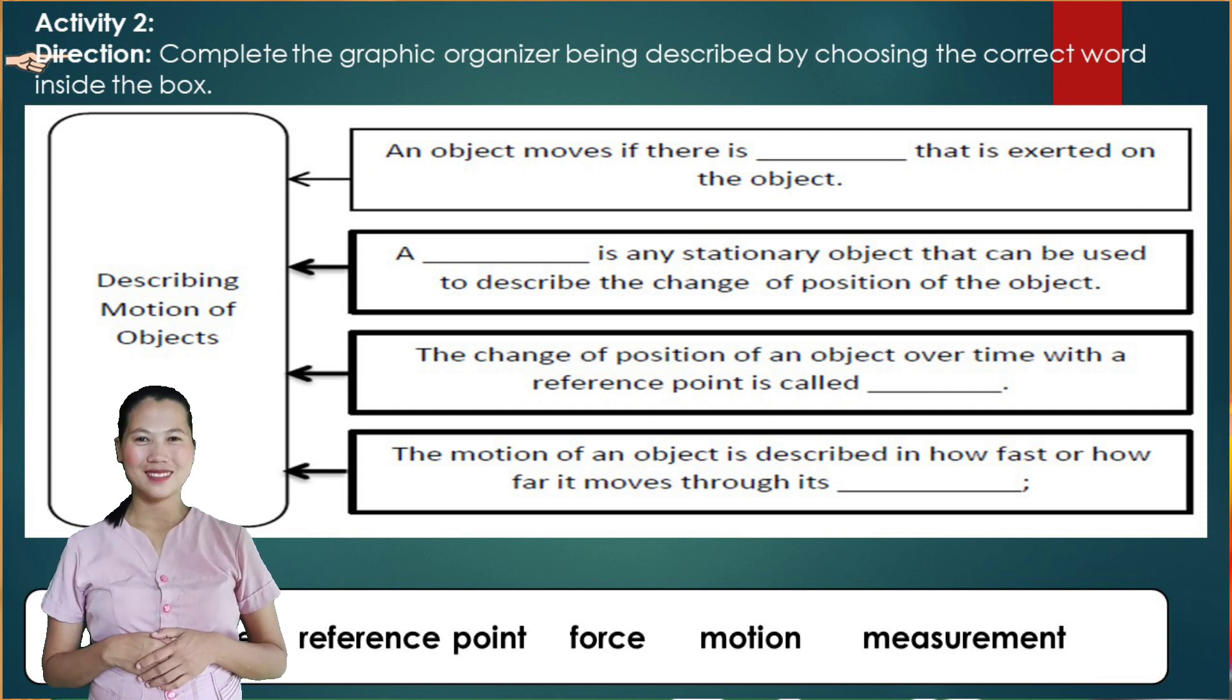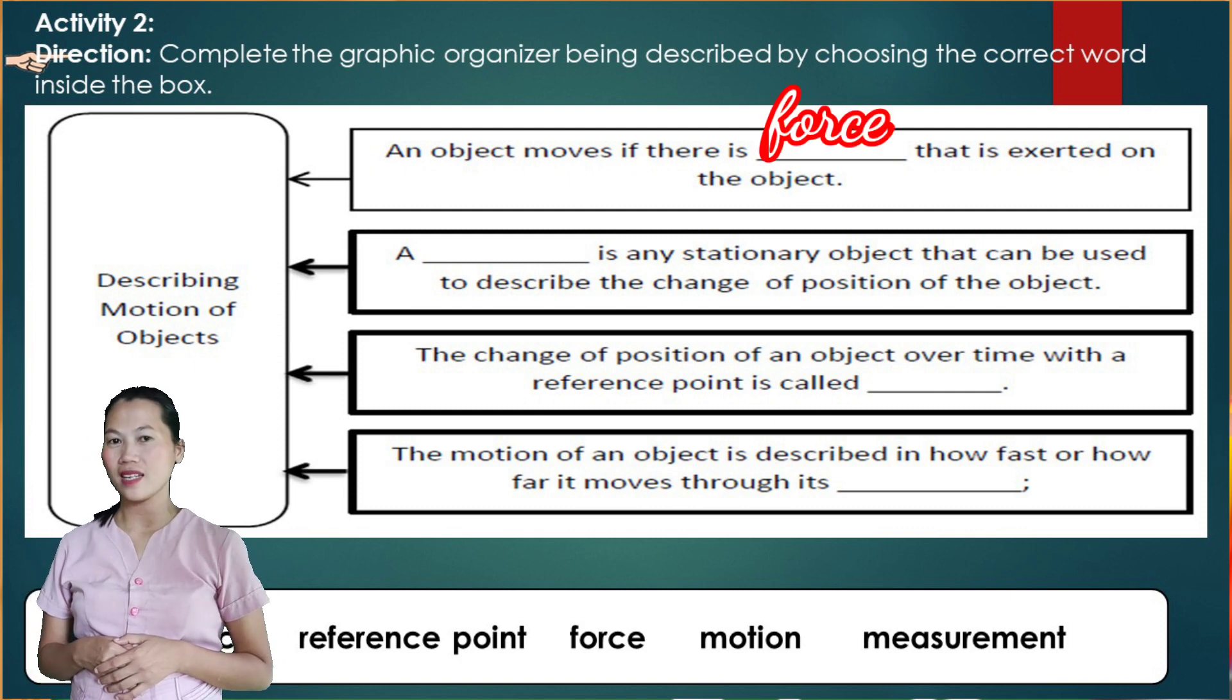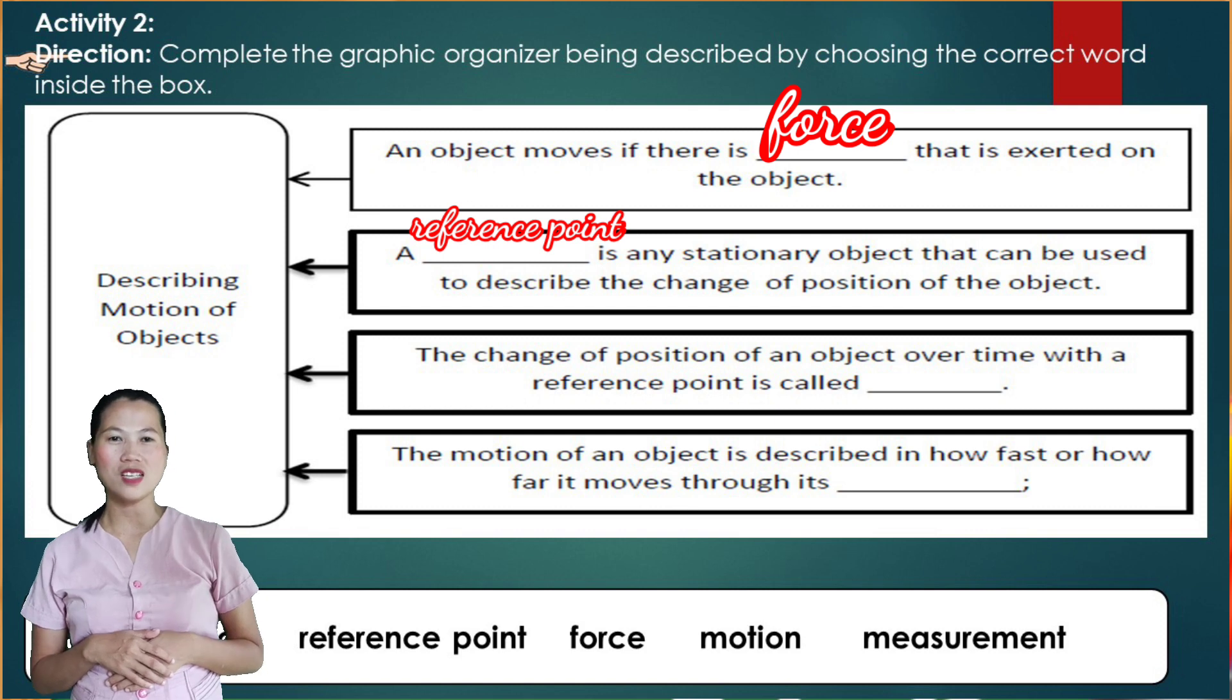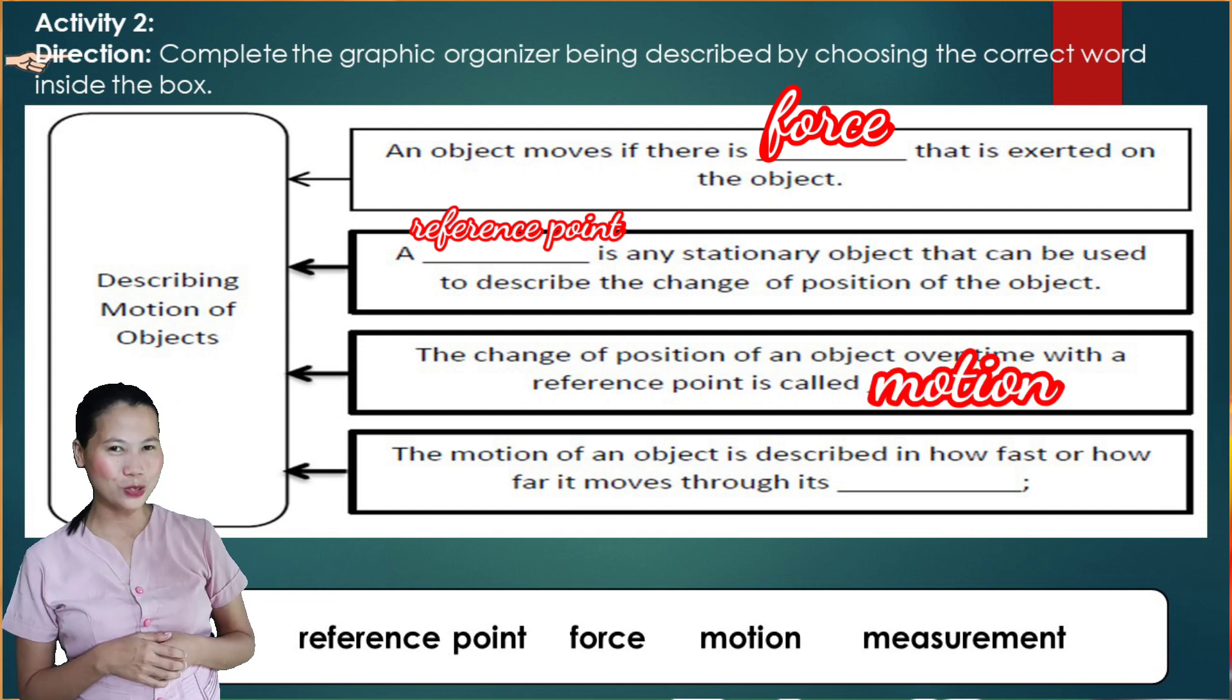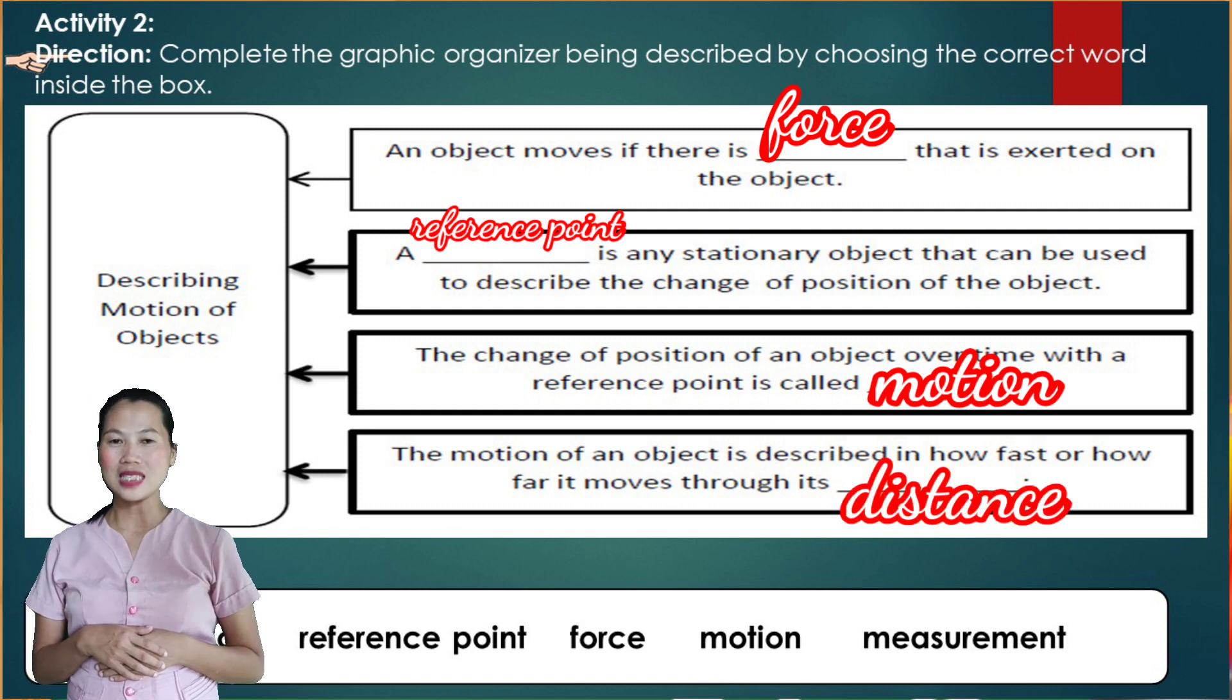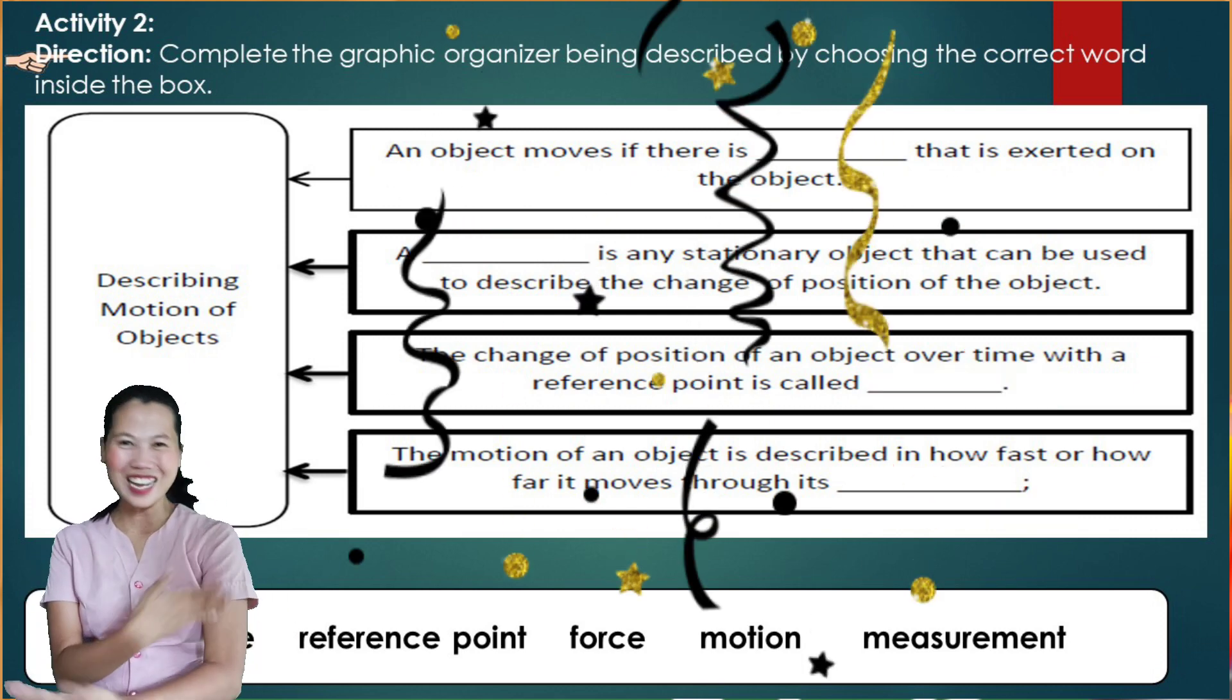Okay, let's check your work. An object moves if there is force that is exerted on the object. A reference point is any stationary object that can be used to describe the change of position of the object. And the change of position of an object over time with a reference point is called motion. The motion of an object is described in how fast or how far it moves through its distance. If you got it right, congratulations!